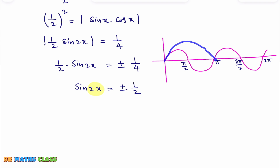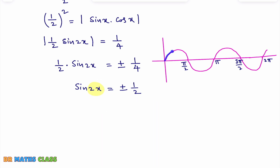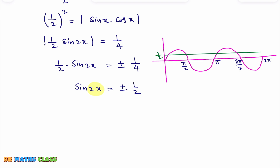The graph of sin x looks like this, but sin 2x is compressed — in place of x if I write π/2, it becomes sin π = 0. This is the graph of sin 2x. Now for sin 2x = 1/2, draw a horizontal line at y = 1/2. From 0 to 2π, you get one solution here, a second solution, a third, and a fourth — total four solutions.